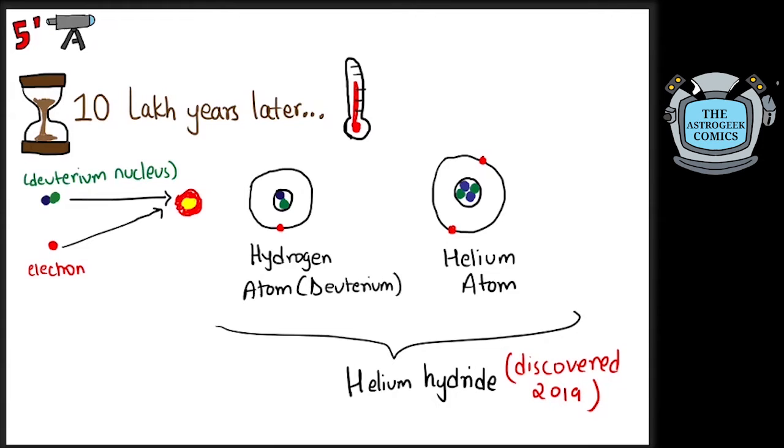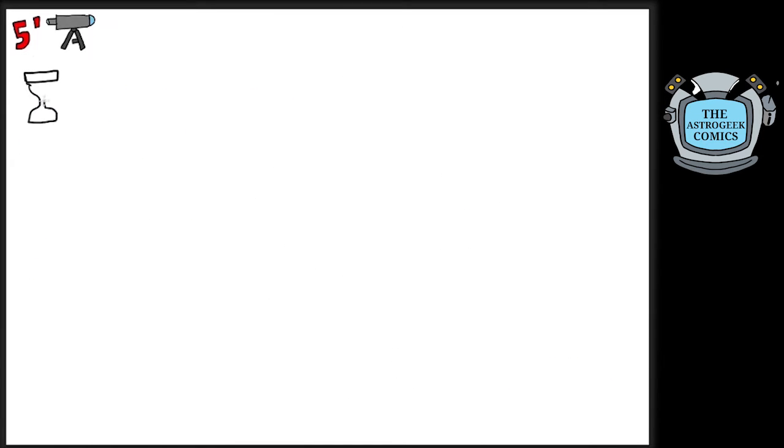Higher elements did not form because the period with temperature hot enough for nuclear fusion to occur, but low enough for the nuclei formed to be stable was very short. After a few hundred million years, the first stars started forming.